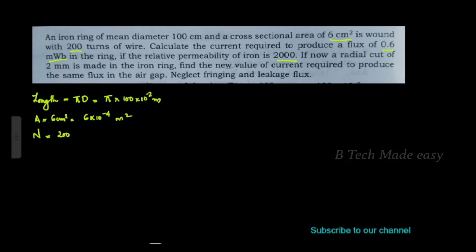The current ring — how much is the current? To produce a flux of 0.6 milliweber. That flux is 0.6 milliweber, that is 0.6 into 10 raise to minus 3 Weber. If the relative permeability of iron is, μr is 2000.